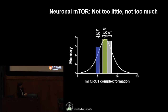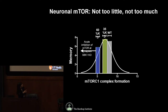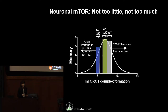Taken together, this data told us that the relationship between complex 1 formation and memory is not linear — there is actually a sweet spot at a dose slightly below wild-type. If we keep reducing complex 1, it becomes deleterious, consistent with prior studies showing acute TOR inhibition at synapses blocks LTP. Increasing complex 1 above normal is also harmful, consistent with cognitive impairment seen in TSC1 and TSC2 knockouts where TOR is hyperactive.